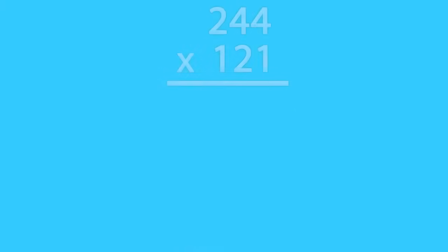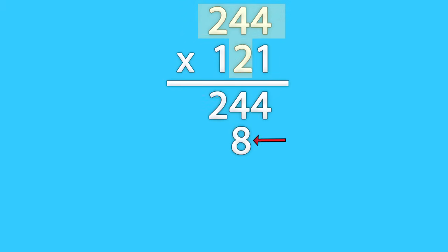What about multiplying two numbers with three digits, like 244 times 121? Well, you'll start the same as all the other problems we've done. Then, when it's time to multiply the third digit, instead of leaving just one space, you'll leave two.